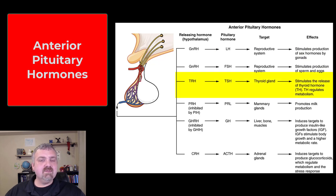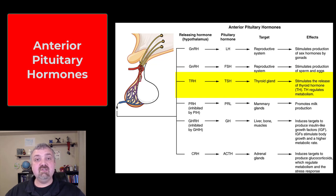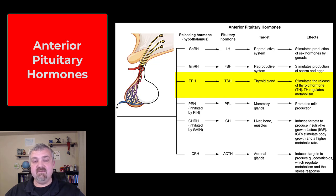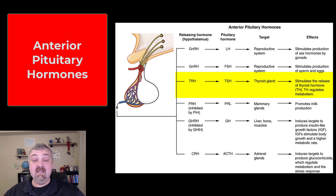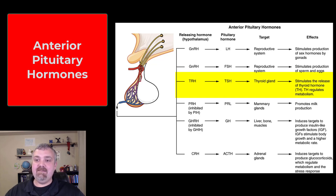Next is thyroid-stimulating hormone. Thyrotropin-releasing hormone from the hypothalamus stimulates the production and secretion of TSH, which goes to the thyroid gland to stimulate the production and release of T3 and T4 — your two thyroid hormones. T4 is the storage form, while T3 is much more metabolically active. Many cells can remove the fourth iodine to make T3, and it appears that even your microbiome plays a role in the conversion of T4 to T3.